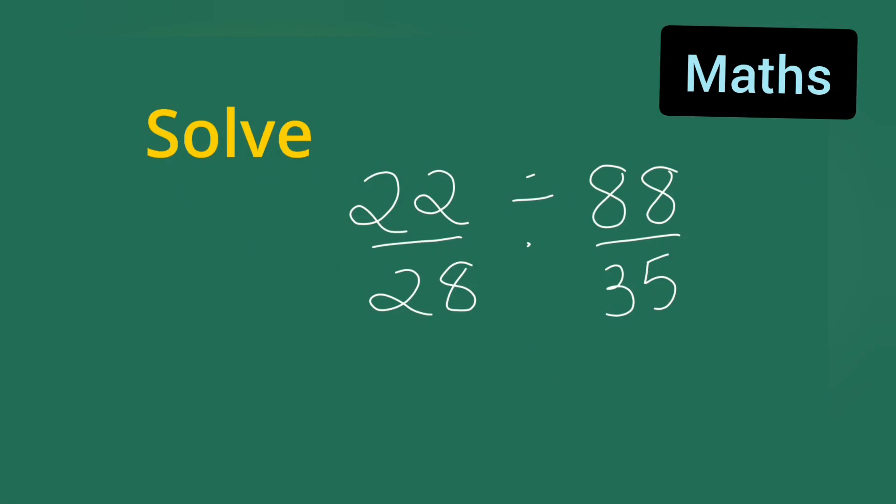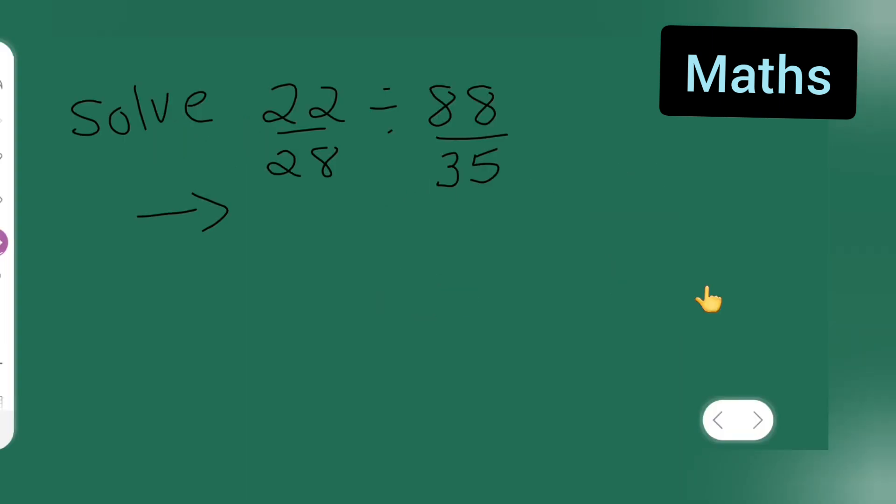In today's mathematics class, let us solve 22/28 divided by 88/35. The first thing you'll have to do is write 22/28, and instead of divide, put a multiply sign.